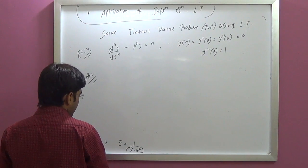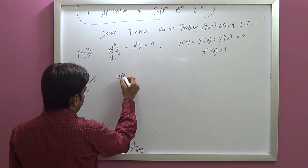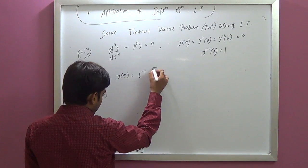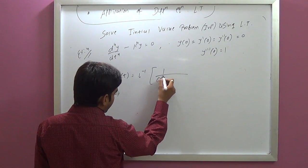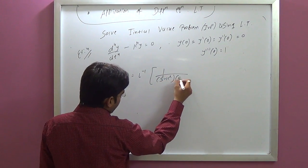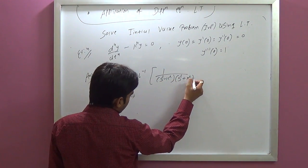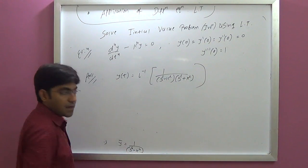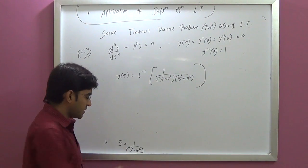Taking the inverse: Y-bar equals 1 over (s²  minus k²)(s² plus k²), since s⁴ minus k⁴ factors as (s² minus k²)(s² plus k²).